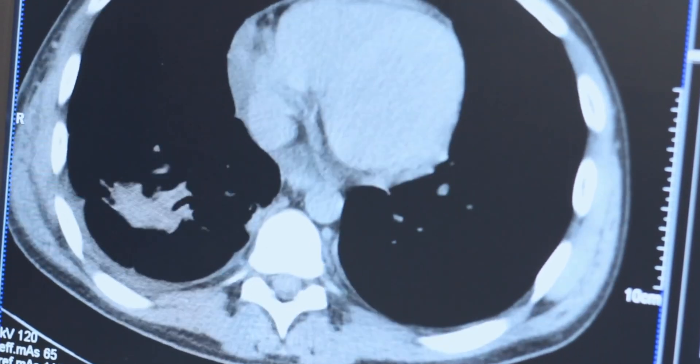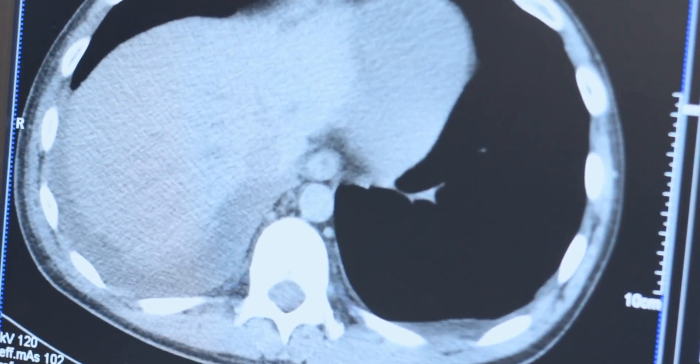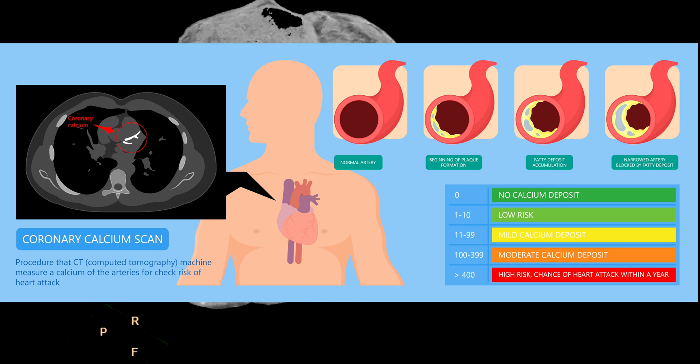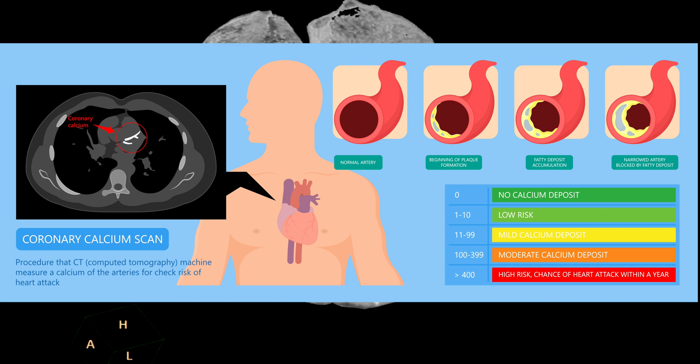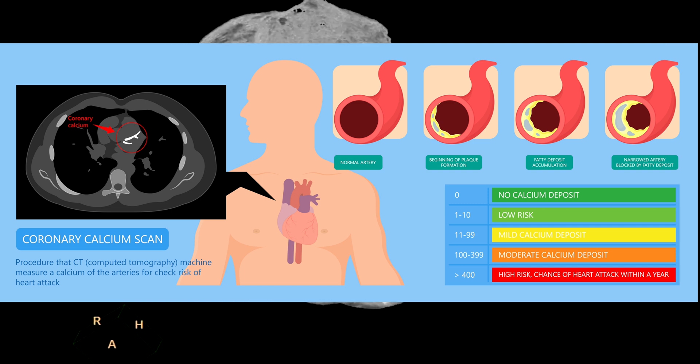The calcium score comes up with a value — it's a number. The Agatston score is the type of score that we look for. Essentially, it's a number that reflects the total area of calcium deposits around the arteries of the heart and the density of the calcium. When we have a calcium score of zero, that means no calcium has been detected around the arteries, and that suggests a very low chance of developing a heart complication in the future. But as the calcium score increases, the likelihood of having plaque deposits and those plaques causing complications in the future also increases.